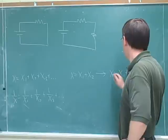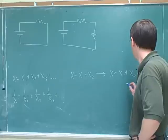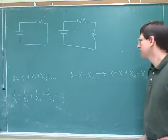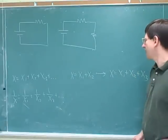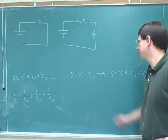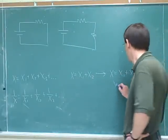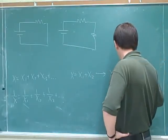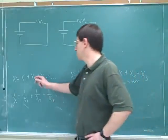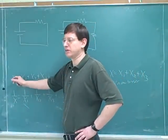Is adding in x3 going to make x bigger or smaller? Is x going to be bigger in this equation than it was before, or smaller? Let's suppose everything is a positive number. This is the equation to use when adding the new device makes x bigger.